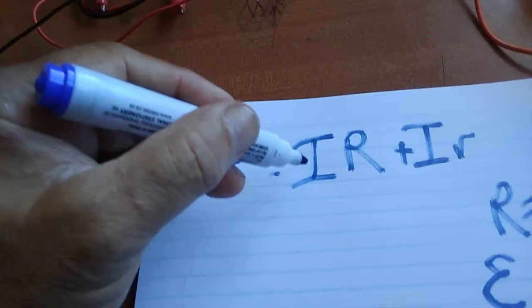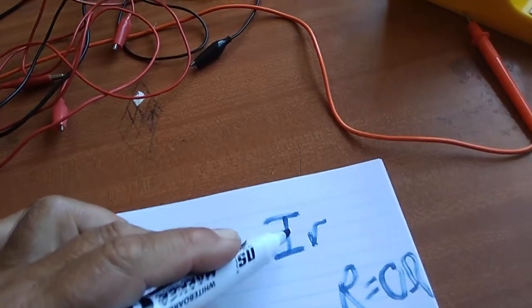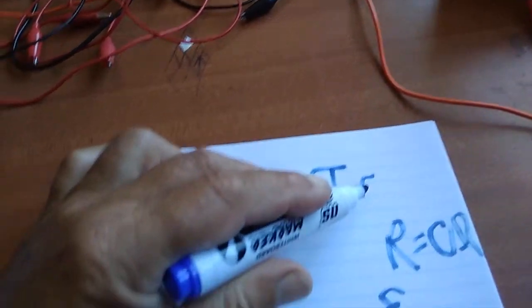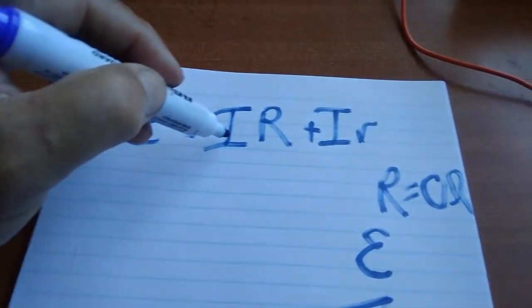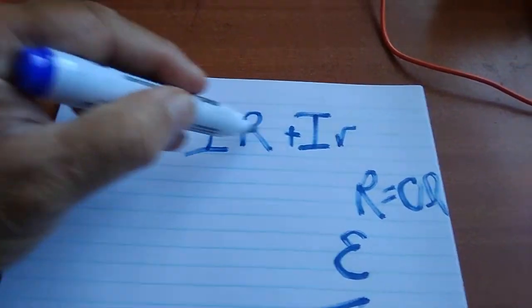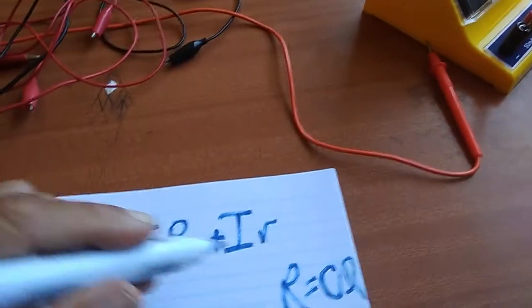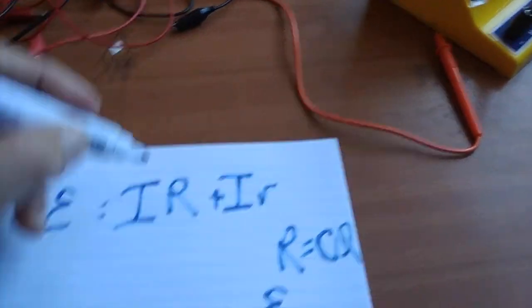We're going to measure that, and then that same current will flow through the internal resistor. Do you see that if our external resistance is zero, I times zero is going to fall away.